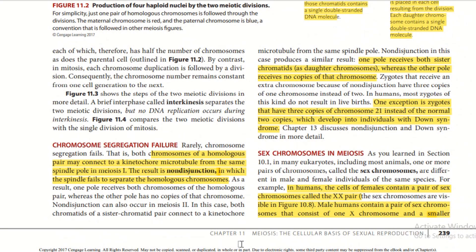Chromosome segregation failure: rarely, chromosome segregation fails. Both chromosomes of a homologous pair may connect to kinetochore microtubules from the same spindle pole in meiosis I, resulting in non-disjunction, in which the spindle fails to separate the homologous chromosomes. As a result, one pole receives both chromosomes of the homologous pair, whereas the other pole receives no copies. Non-disjunction can also occur in meiosis II, where both sister chromatids connect to kinetochore microtubules from the same spindle pole, producing similar results.